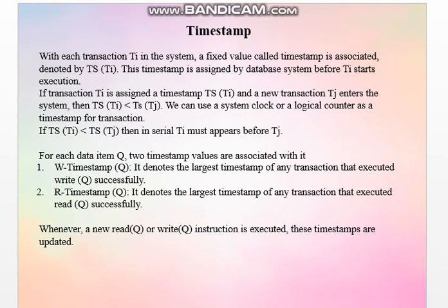If TS(Ti) is less than TS(Tj), then in the serial schedule Ti must appear before Tj. In simple language, a timestamp is a system time assigned to a transaction. For example, if transaction T1 starts at 10:30, it is given TS = 10:30. If T2 arrives at 10:35, it is given TS = 10:35. The values 10:30 and 10:35 are the timestamps assigned by the system.